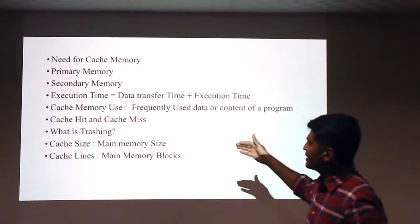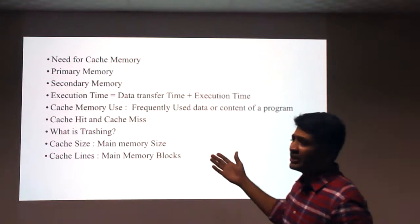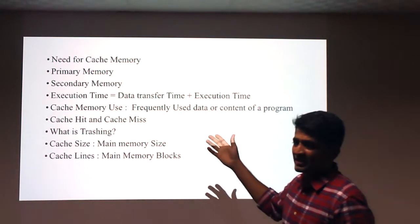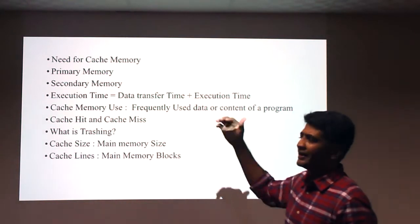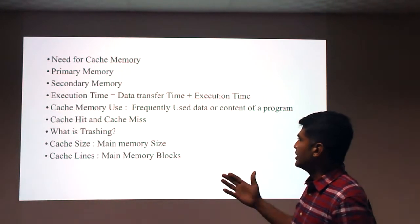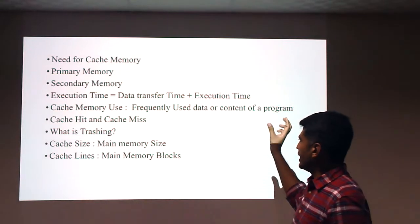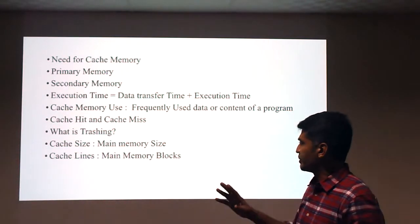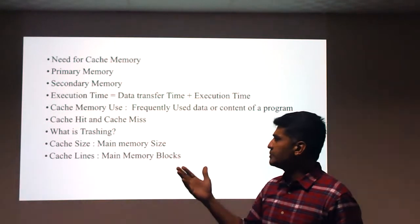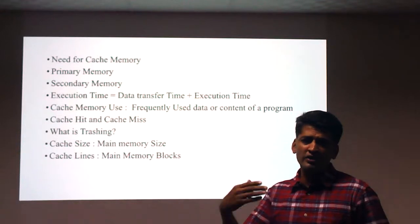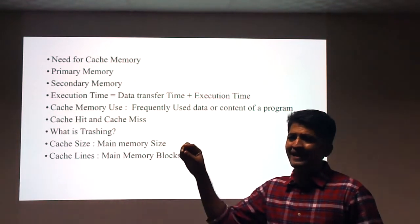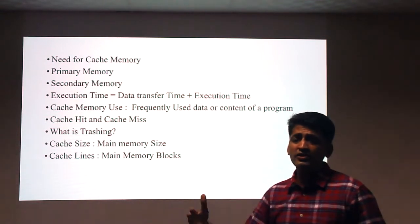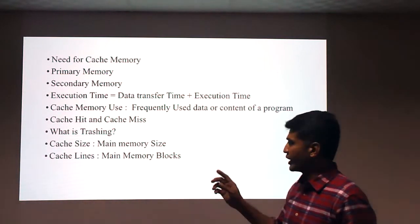Key concepts to know before studying cache mapping functions include: the memory hierarchy (cache, primary, secondary memory); execution time, which consists of data transfer time plus processing time; frequently used data is stored in cache. Cache hit means the required data is found in cache memory; cache miss means the required data is not available in cache.